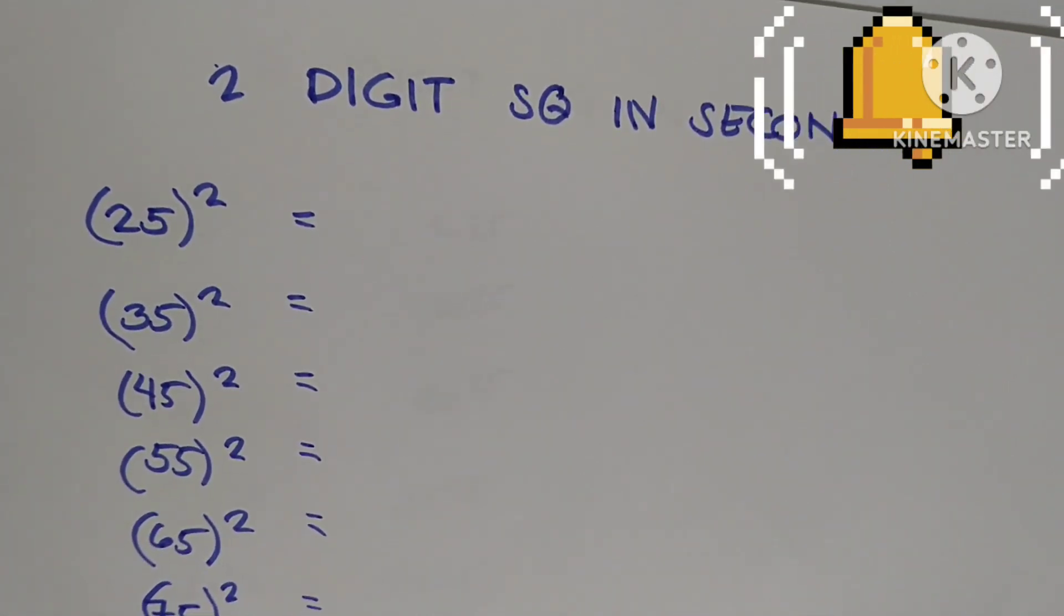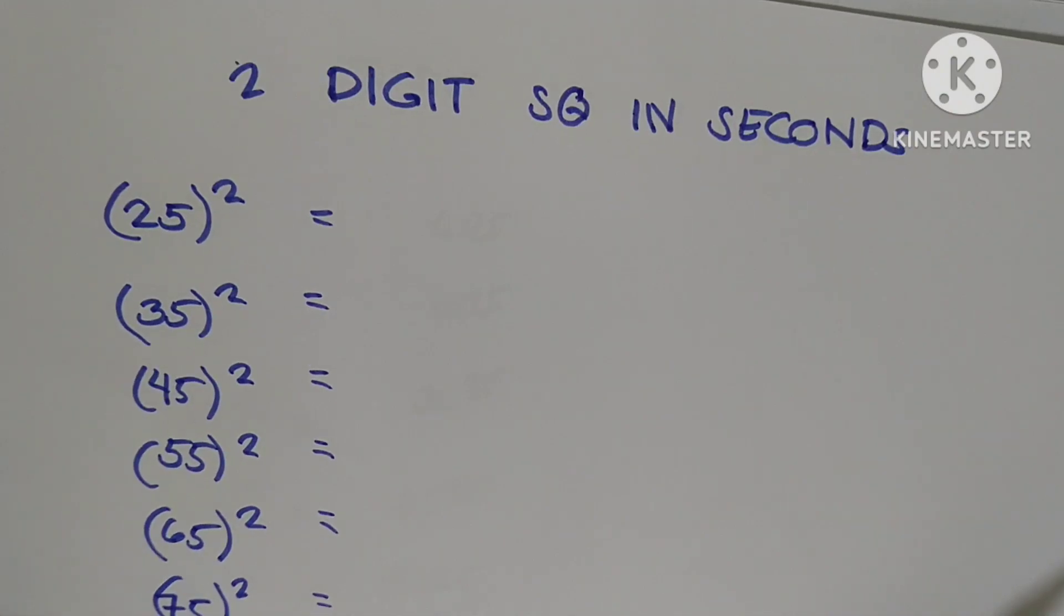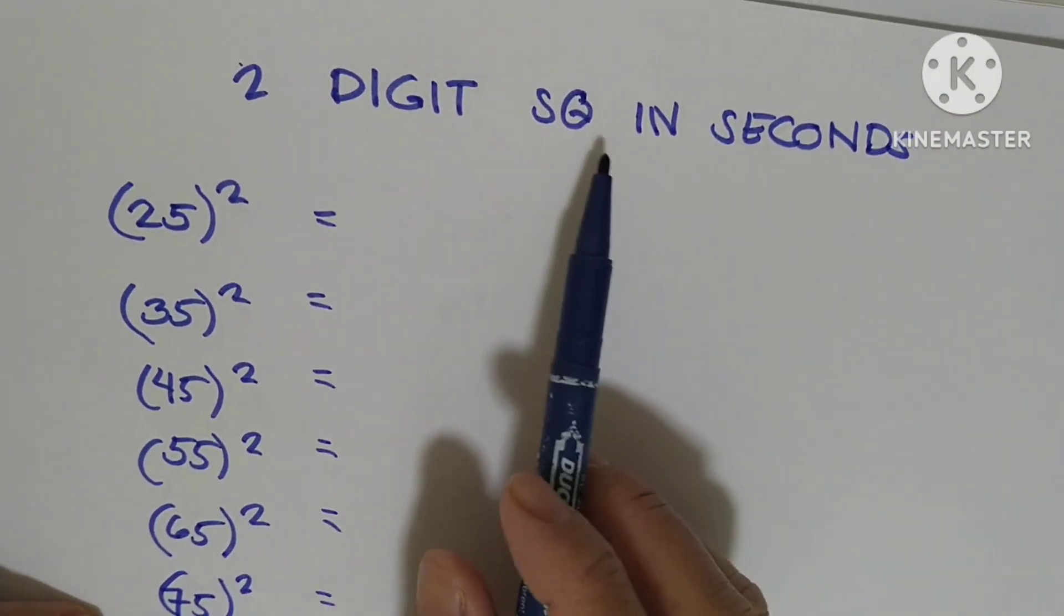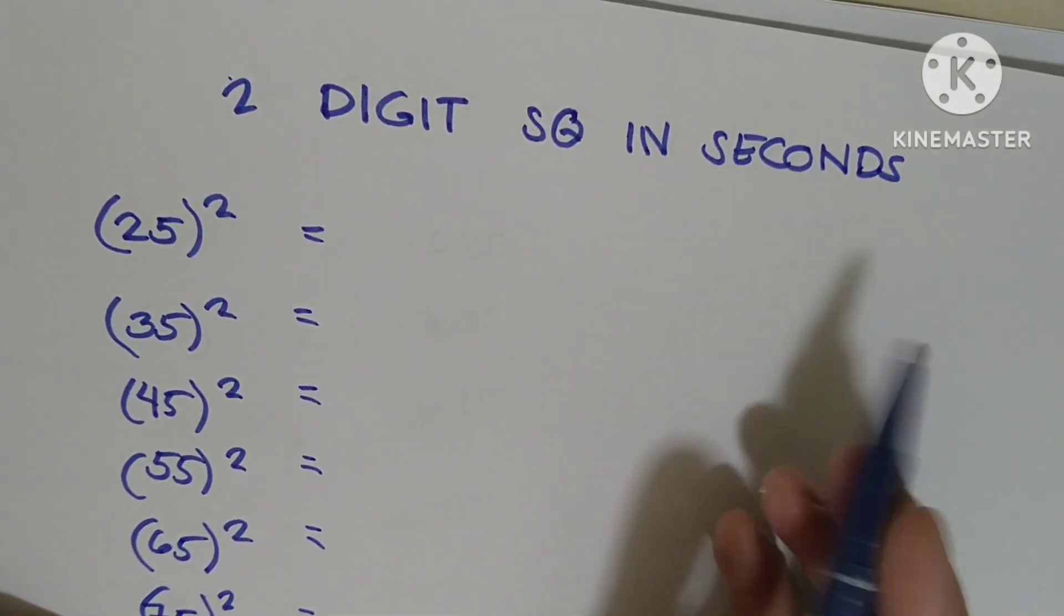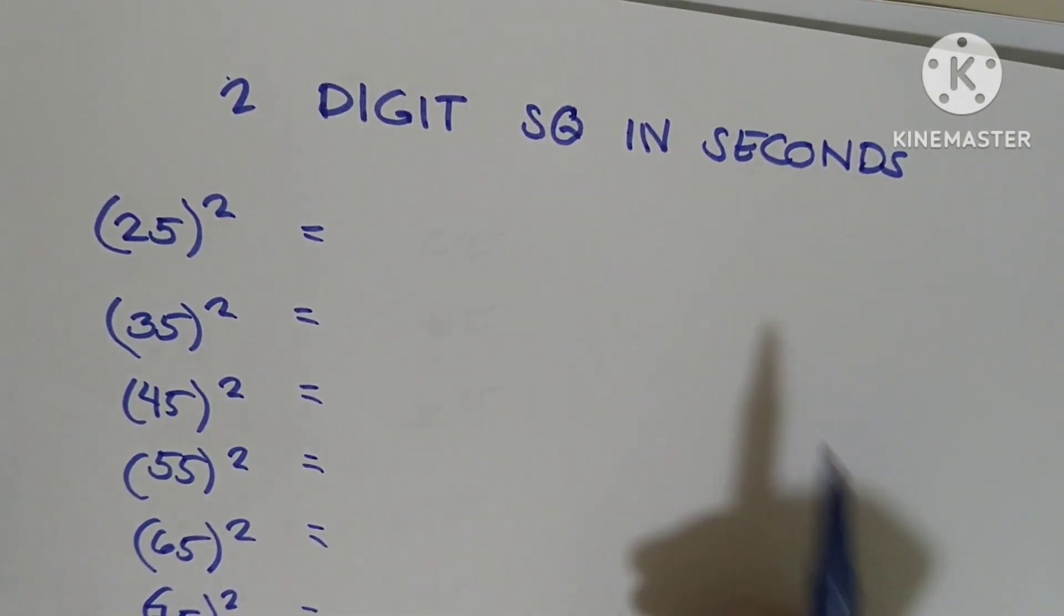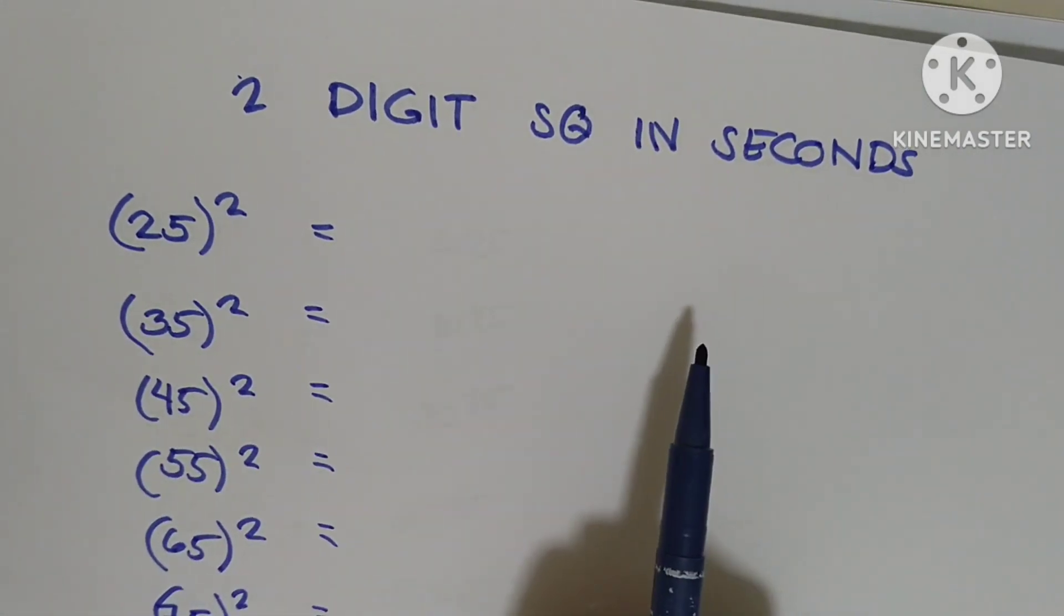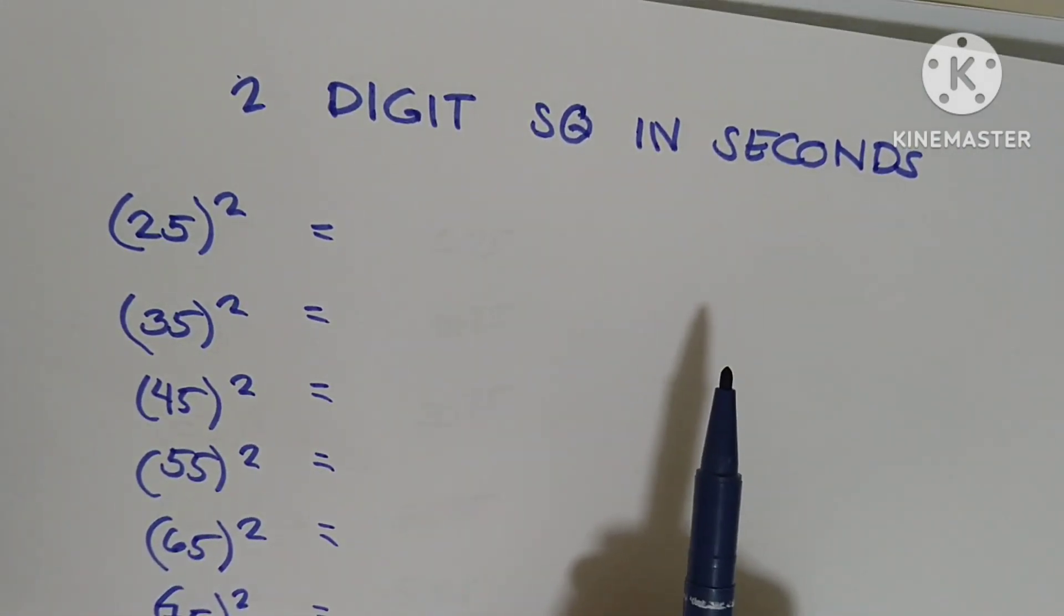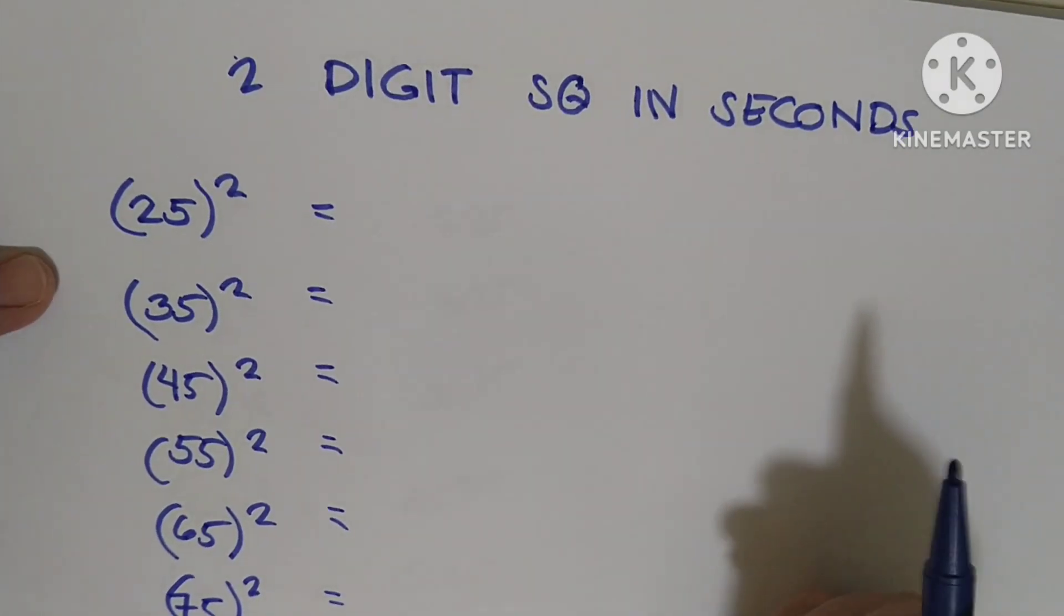Hello guys, welcome back to my channel. In today's video I will show you very easy tricks on how to compute two-digit squares in seconds. This means I will compute these without using a calculator, in seconds, only using mental math. Before we start, if you are new to my channel please subscribe and hit the notification bell for more updated videos. Let's try it, here we go.